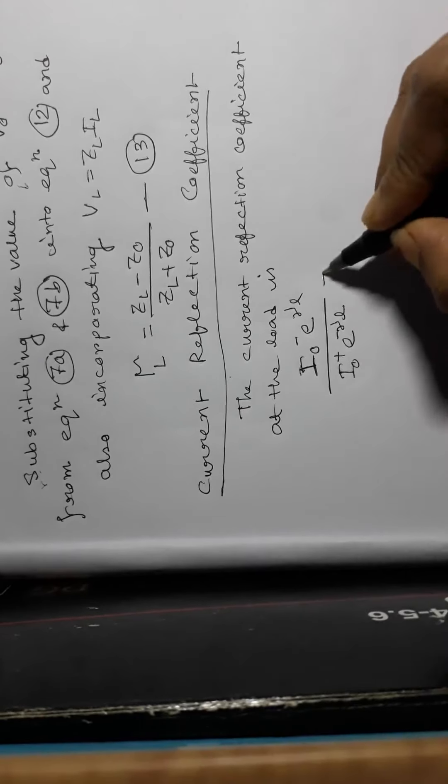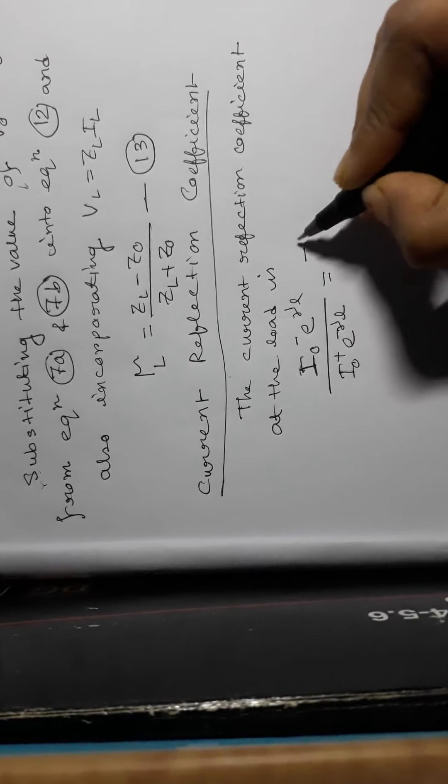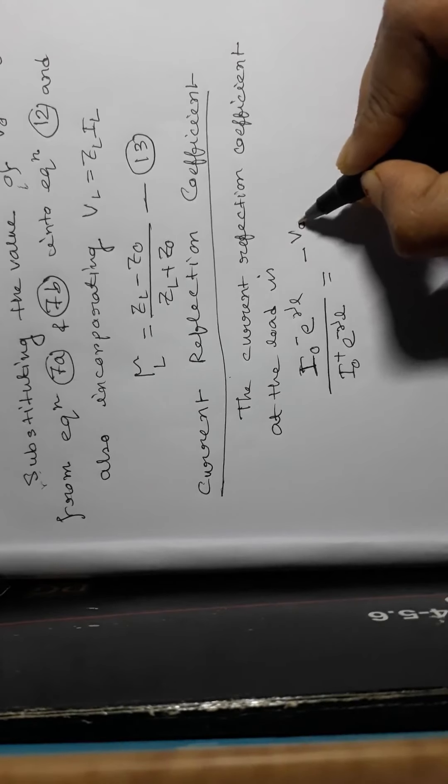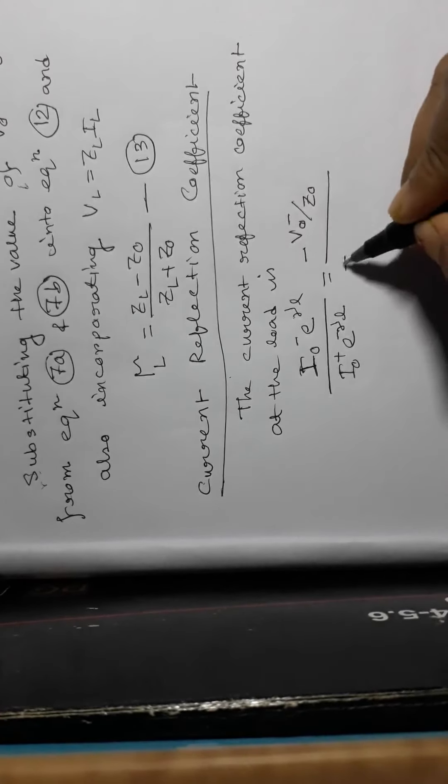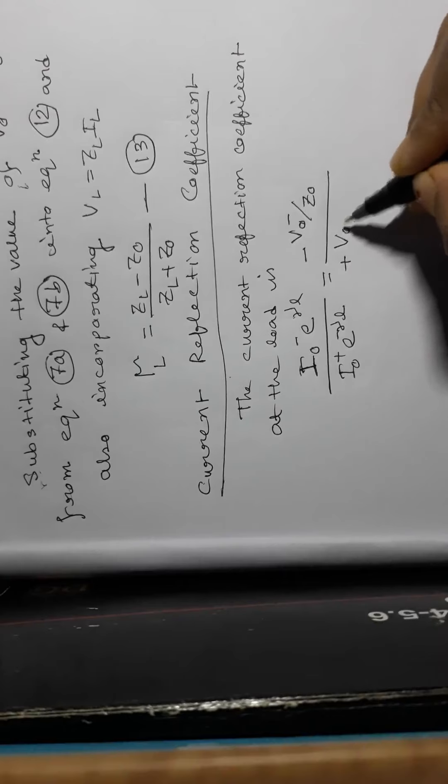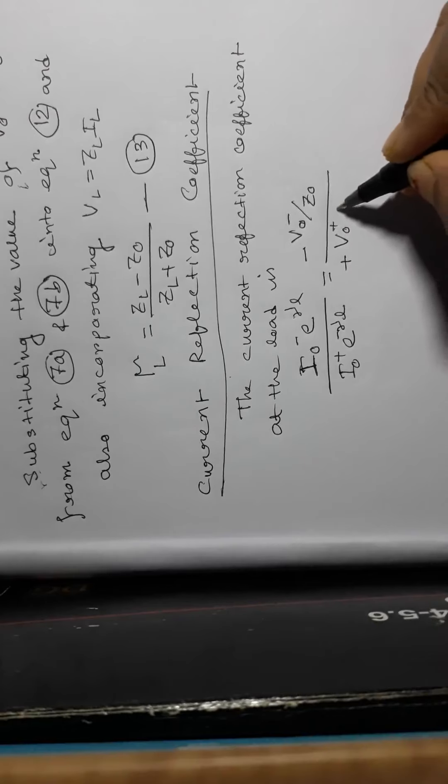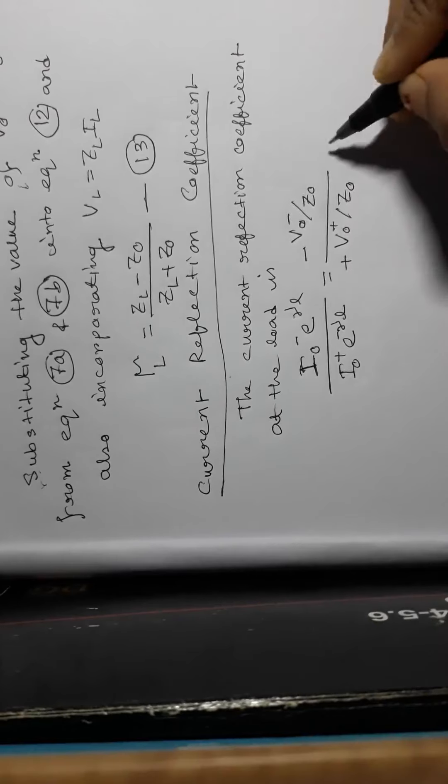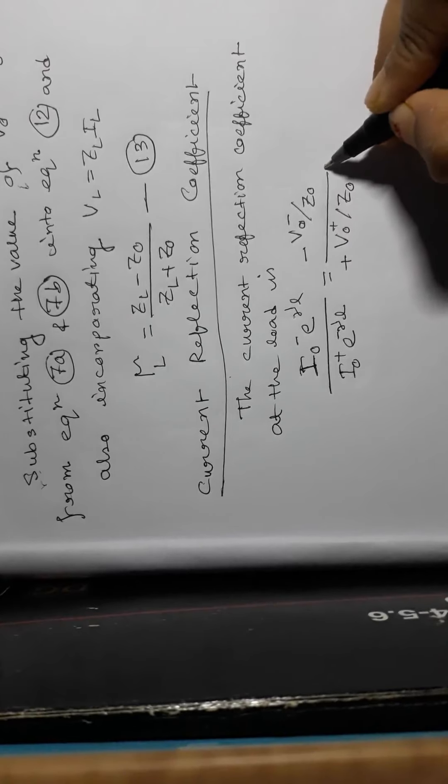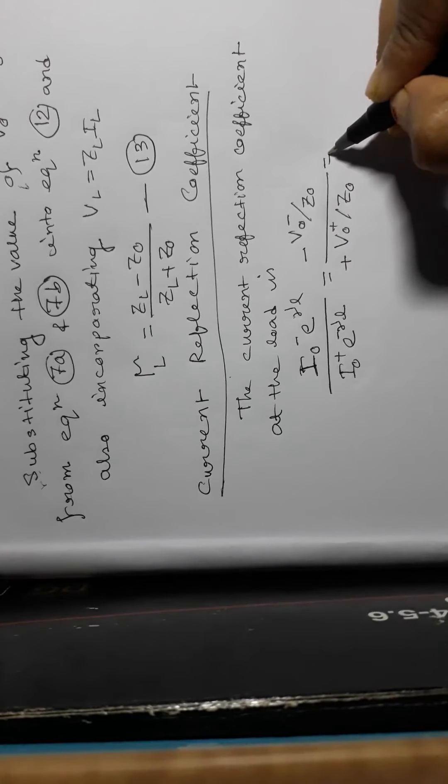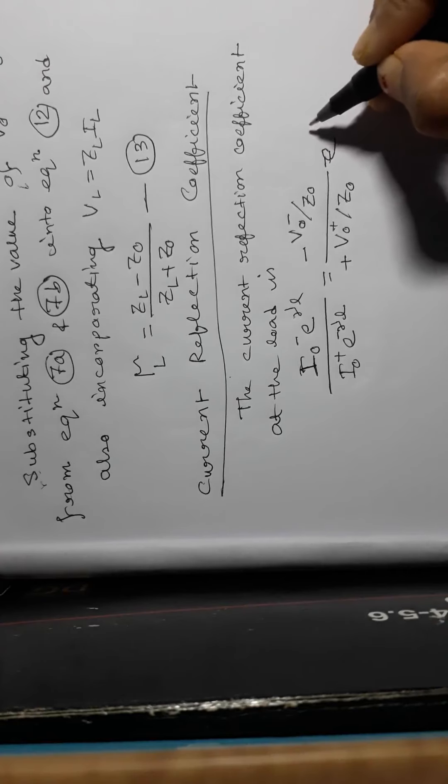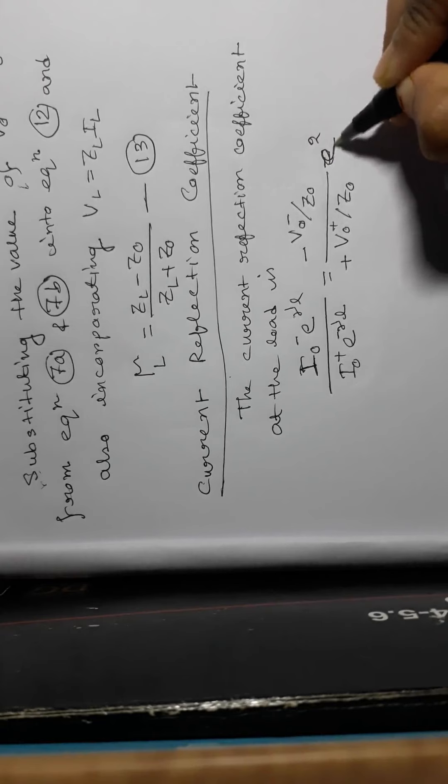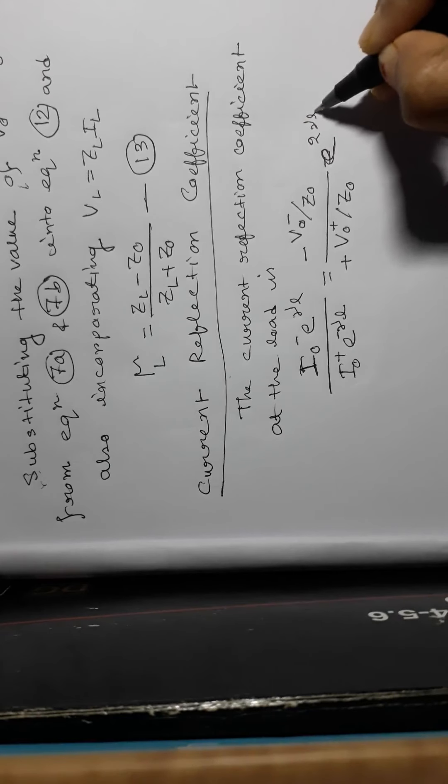That is equal to minus of U0 minus by Z0, plus U0 plus by Z0. This is equal to n into e to the power 2 gamma L.